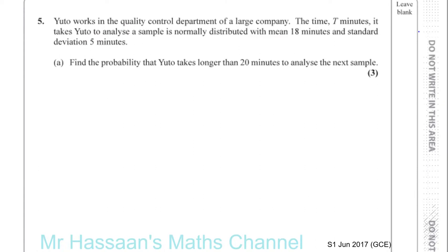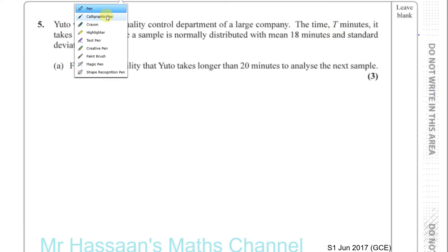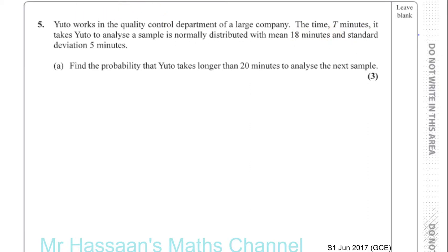Yuto works in the quality control department of a large company. The time in minutes it takes Yuto to analyze a sample is normally distributed with a mean of 18 minutes and a standard deviation of 5 minutes. So the time taken is normally distributed with a mean of 18 and a variance of 5 squared.